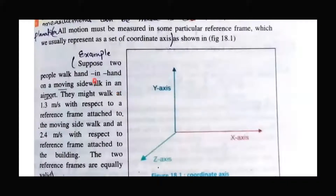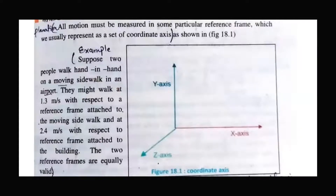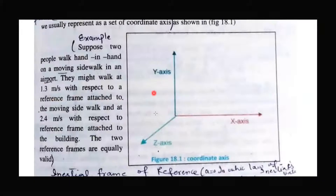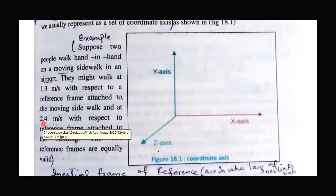There is an example here involving an airport sidewalk — a moving walkway where you can move your luggage. If people in the same frame of reference, where the sidewalk is moving, observe two people on it, their velocity will appear to be 1.3 meters per second. But if there are two people in the airport building observing them, they will see a velocity of 2.4 meters per second. This is because of the different frame of reference.